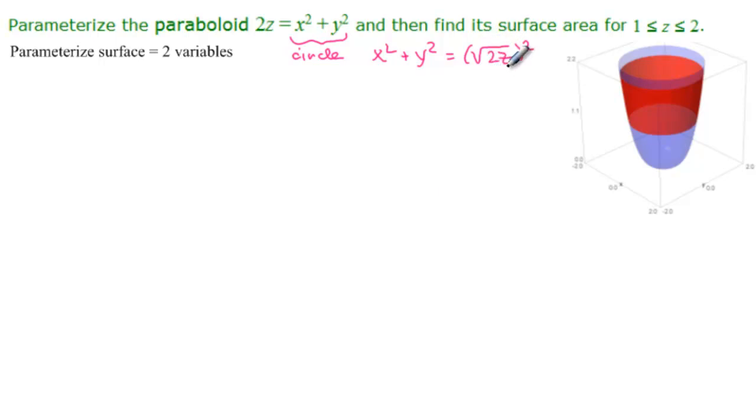So z is going to be one of our variables. And of course, an angle variable for this would be, say, let's say phi. So we would have x equal to radius, the square root of 2z, cosine of phi.